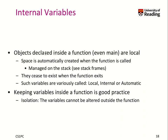Let's talk about internal variables in contrast to global variables. Those variables are often also called local variables. Space for those variables is automatically created when the function is called — it's managed on the stack, inside the stack frames or our activation record. Whenever you leave the function, they cease to exist. They are typically called local, internal, or automatic variables.